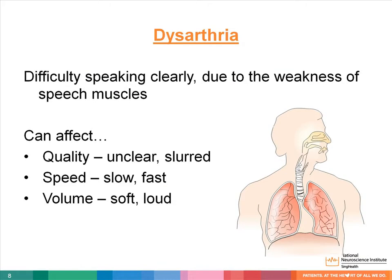The second type of communication disorder is difficulty with the clarity of speech due to weakness of muscles in the chest, vocal cords, soft palate, and the tongue and lips. This may impact on the quality, speed, and volume of speech.